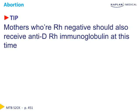As a reminder of a commonly tested topic on the Step 2 exam: anytime you have a mother who is Rh negative and presents with first trimester bleeding, she should receive anti-D Rh immunoglobulin. The medication needs to be given within 72 hours of onset of bleeding to be most effective.